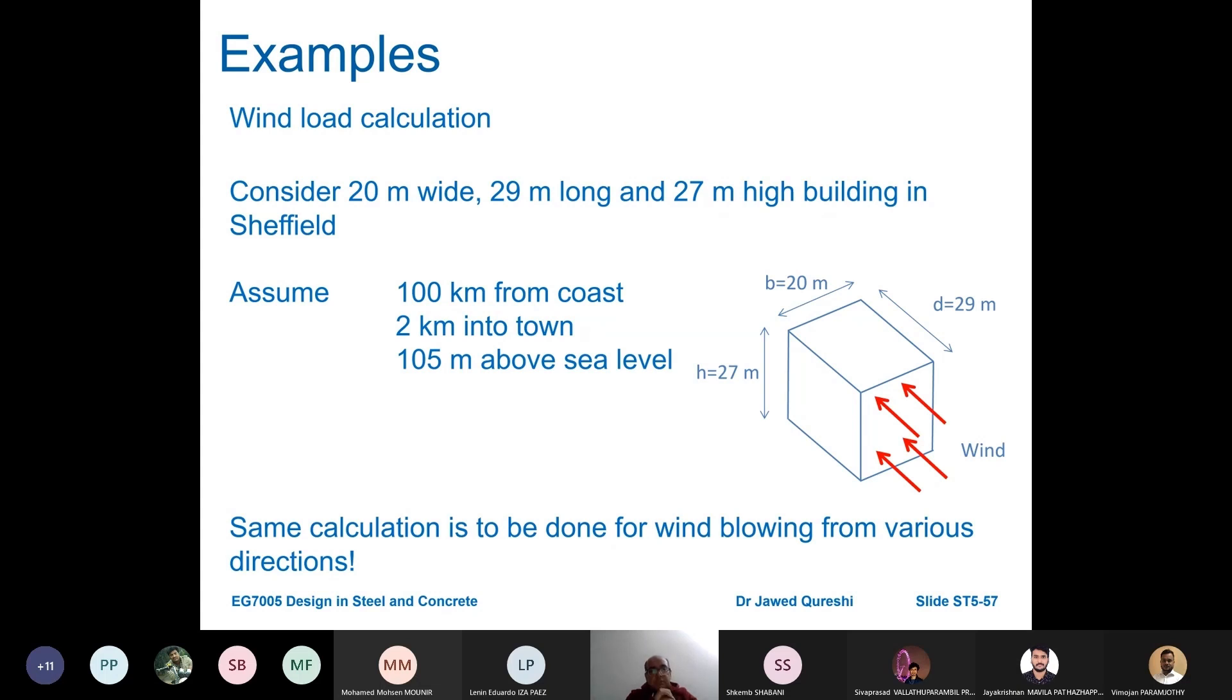Consider a 20 meter wide, 29 meter long and 27 meter high building located in Sheffield, in north of England. Assume 100 kilometer from the coast, 2 kilometer into the town, 105 meter above sea level. The same wind calculations are to be done for wind blowing from various directions.